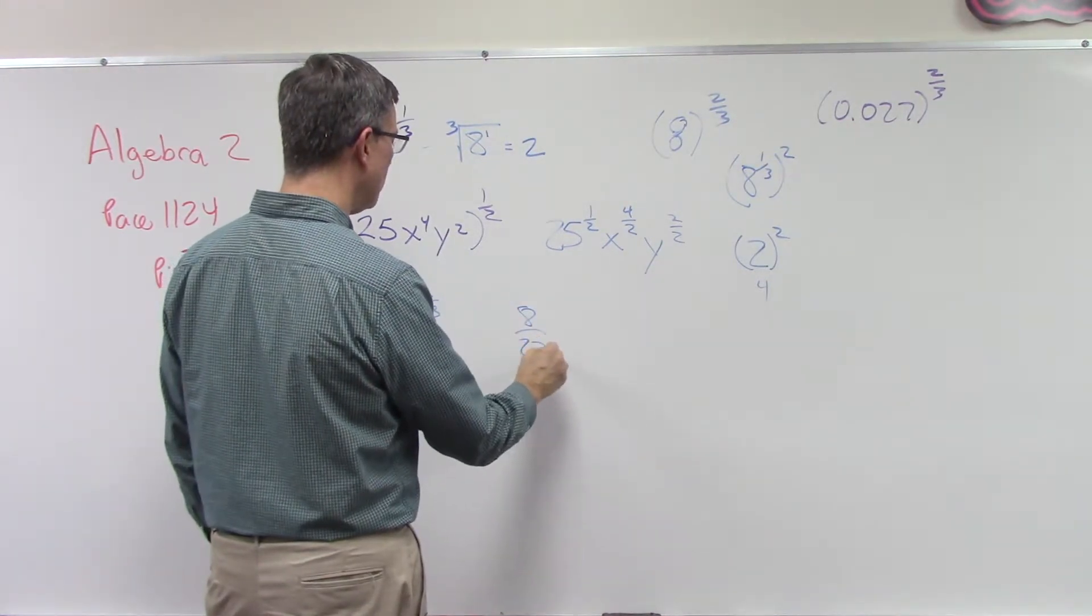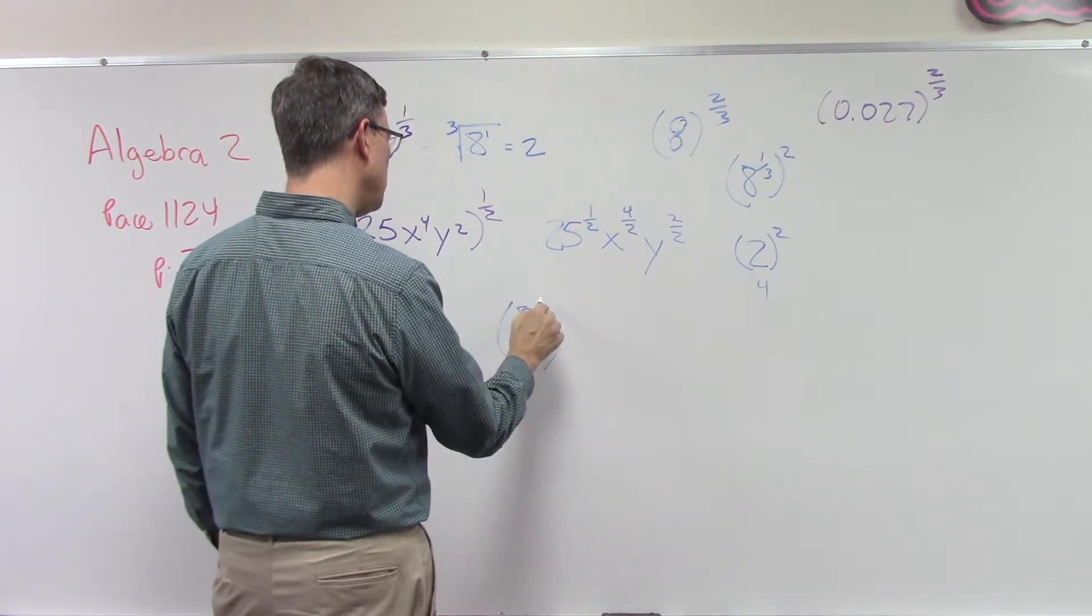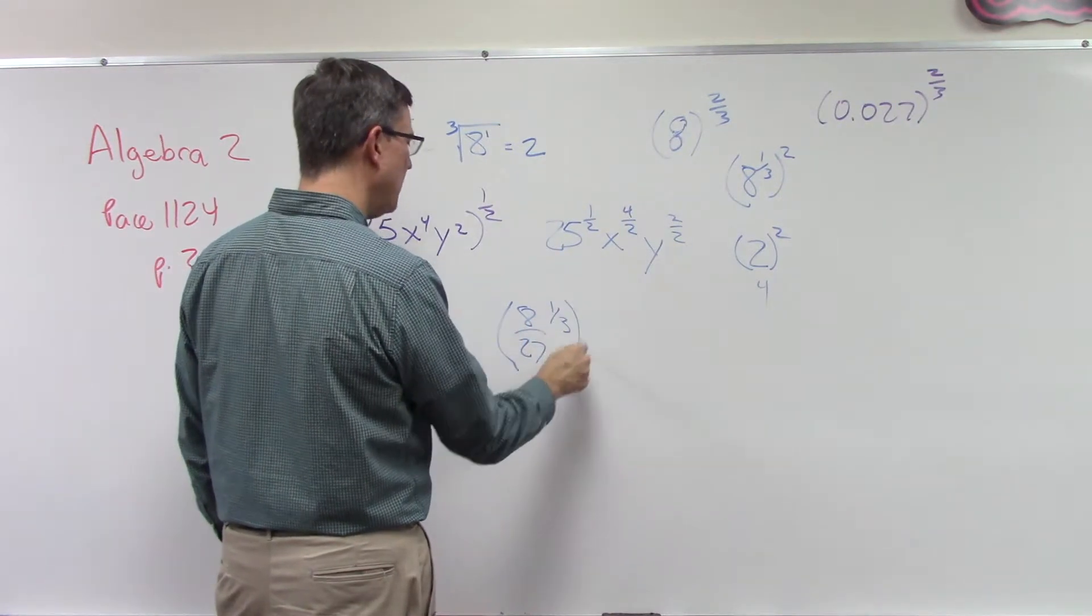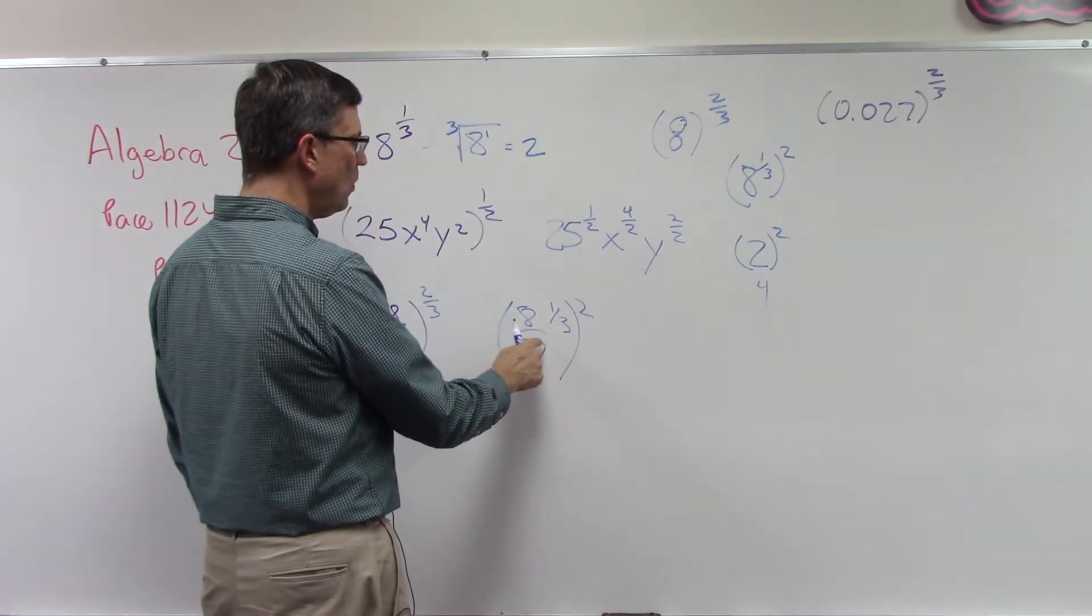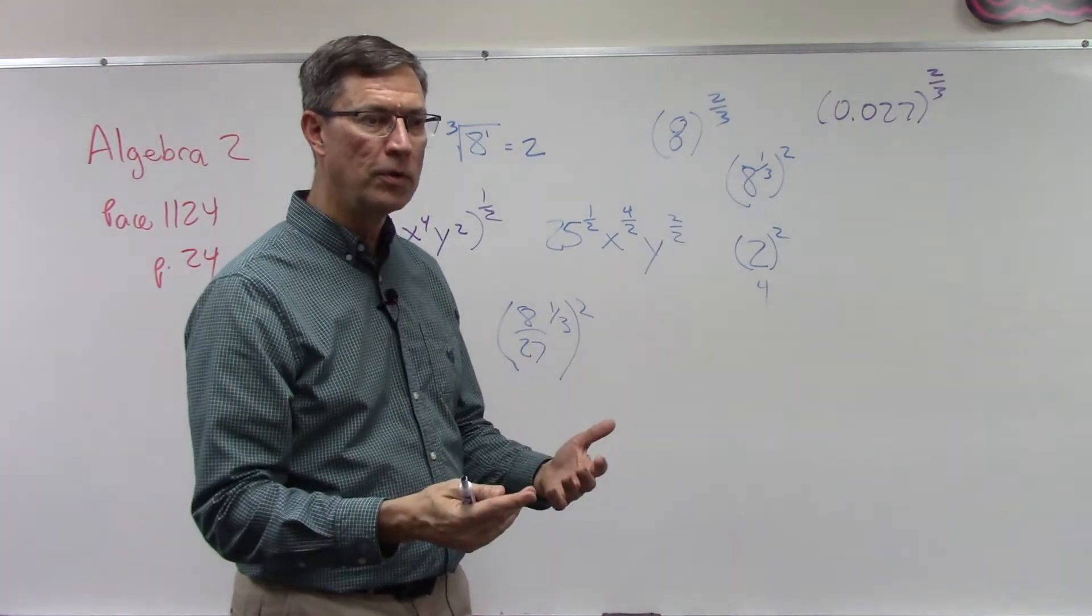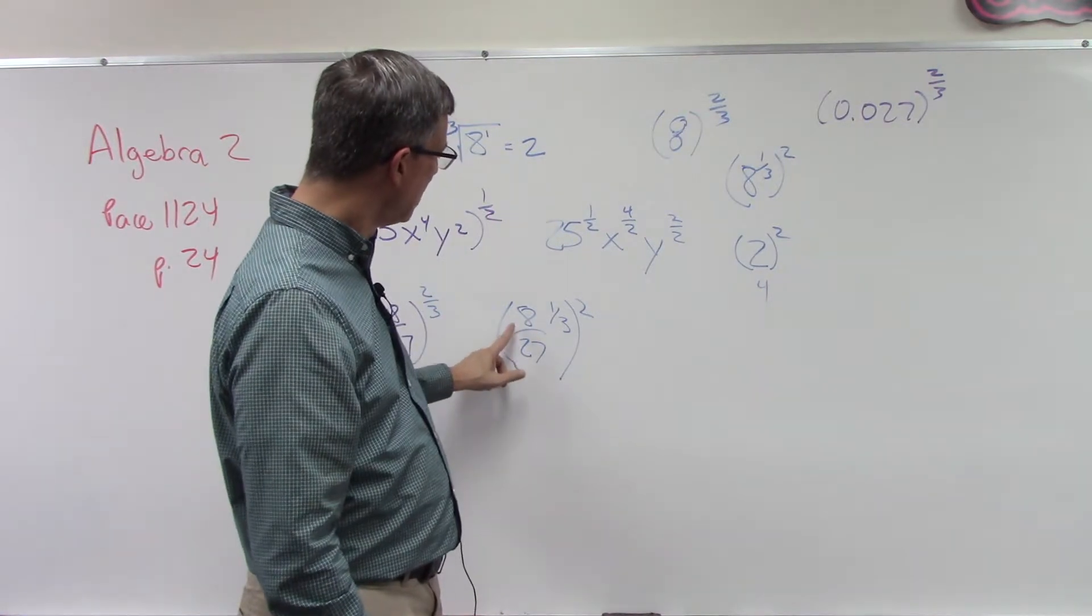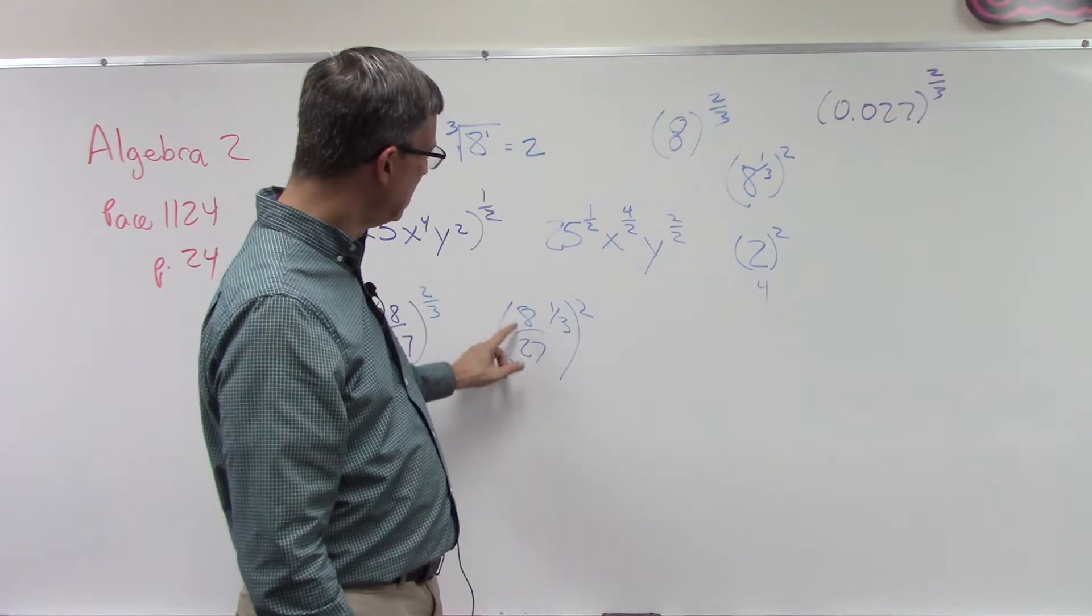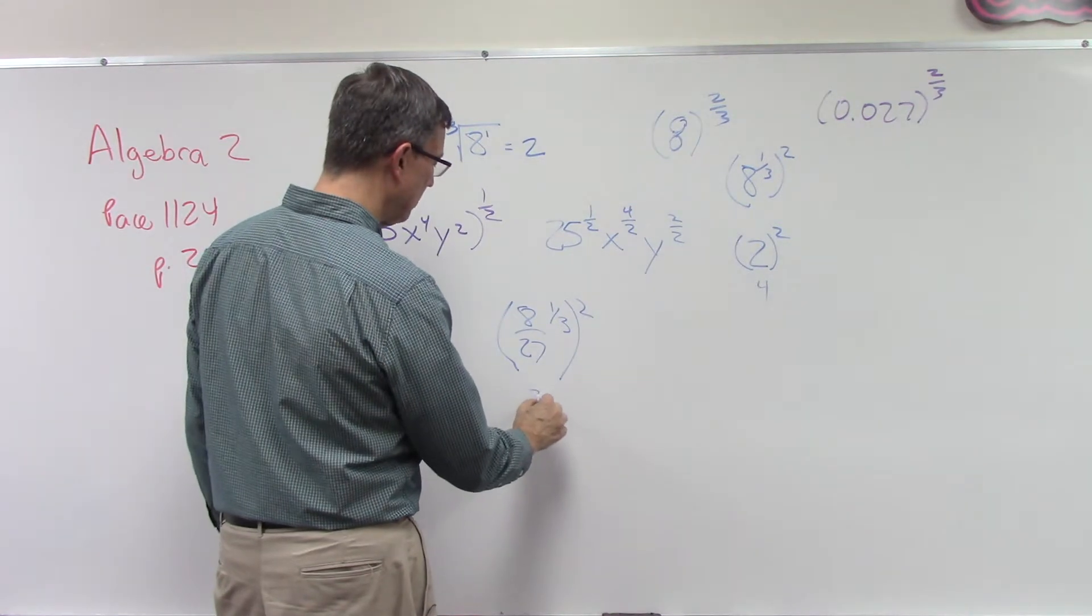Let's talk about how we do this. We're going to write 8 over 27 and raise that to the 1/3 power. We get that answer, we're going to square it. Well, 8 over 27, think of what fraction times itself times itself three times would give me 8 over 27. We could also think of it as distributing this 1/3 to both of these.